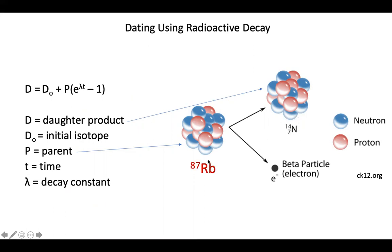Rubidium-87 does the same thing and over time releases a beta particle, gains a proton, and turns into strontium-87. Based on the ratio of rubidium-87 to strontium-87, we are able to tell how old the rock is.